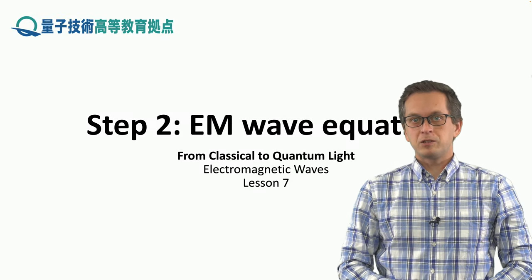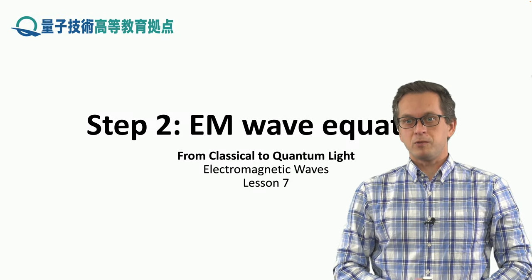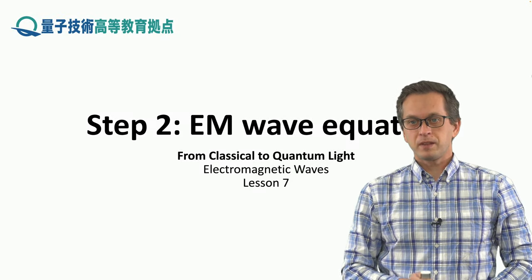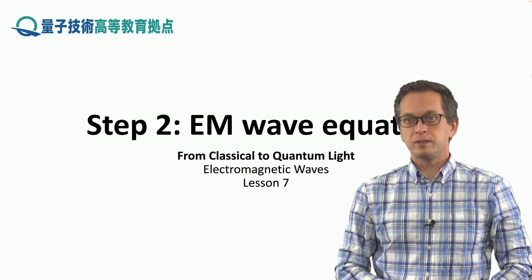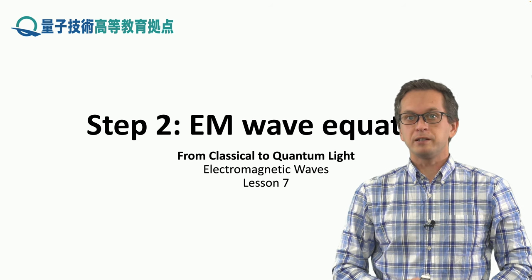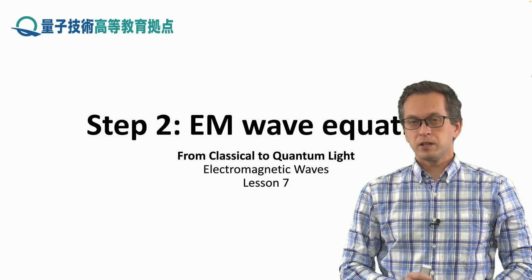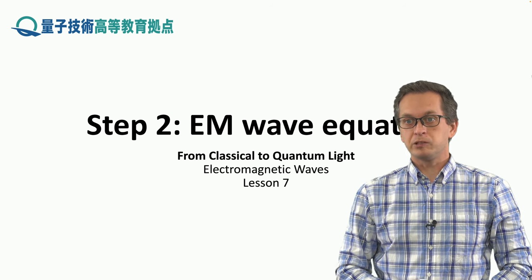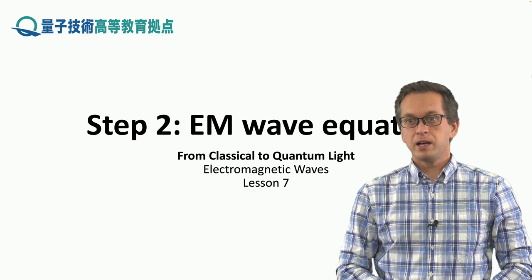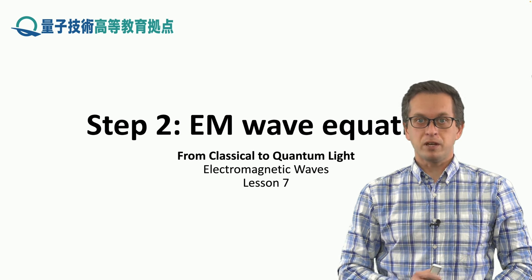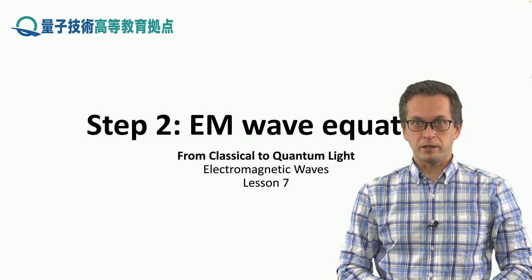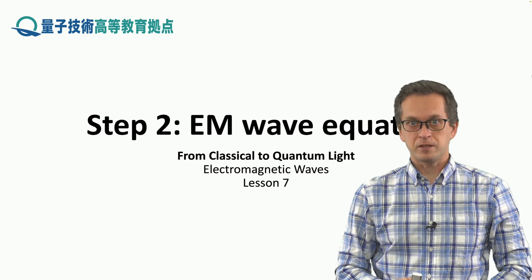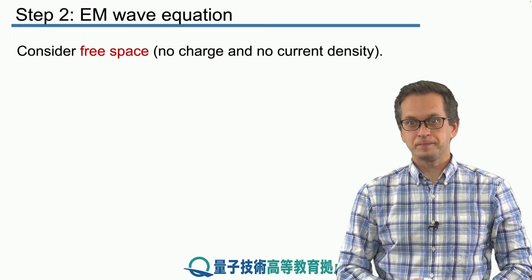Step 2: Electromagnetic wave equation. In this step we will derive the electromagnetic wave equation, show that light is in fact an electromagnetic wave, and also think about how we can produce electromagnetic waves. So let's begin.